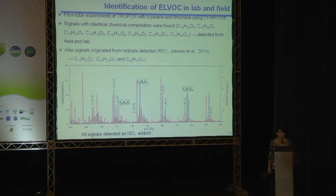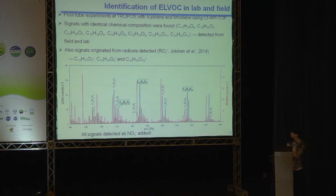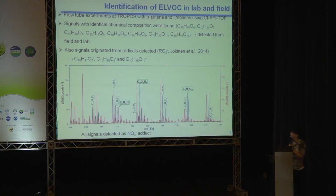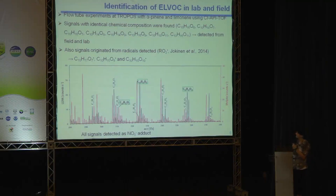As Thomas already mentioned, we are able to detect HOM peroxy radicals with the API-TOF — specifically RO2 radicals. The existence of these RO2 peroxy radicals was recently proven by our working group and is published. We just added nitrogen oxide and saw a nice decrease, confirming they are indeed RO2 peroxy radicals. From the same experiments with alpha-pinene and limonene we identified the most important RO2 peroxy radicals, which were found as C10O7, C10O8, and C10O10. Looking again at the lab and Melpitz spectra, these RO2 peroxy radicals were found in both.